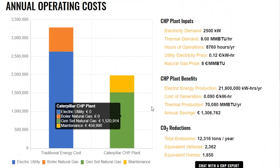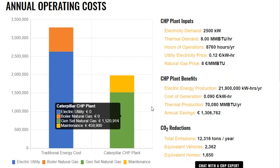A couple of things I want to point out: we have not made any assumptions in these cost calculations for tax incentives or benefits that you may have in your area, so make sure to take those into account when evaluating your site. It also does not take into account any transients or power factors happening at your site for sizing purposes. Overall, Caterpillar CHP applications have a more efficient operation — we use heat energy that was otherwise wasted and we're reducing the carbon footprint.